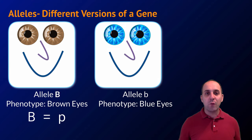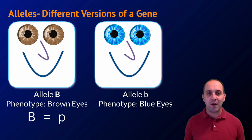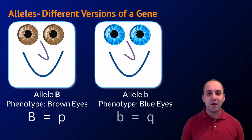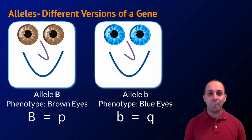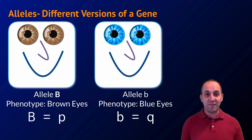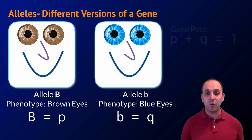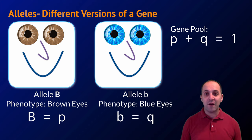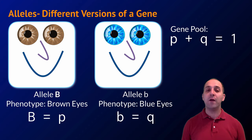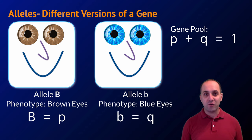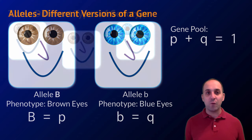For the Hardy-Weinberg equations, we change the terminology slightly. The dominant allele, big B, is symbolized as p, and the recessive allele is symbolized as q. Since any individual allele is either dominant or recessive — either p or q — when you add them together they have to equal a total frequency of one in any population with simple two-allele inheritance.